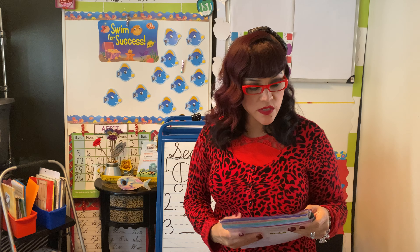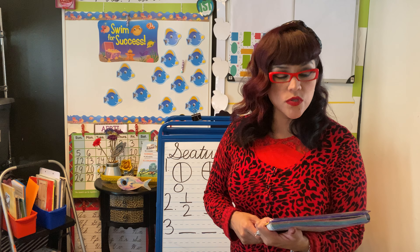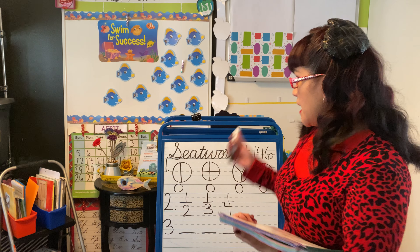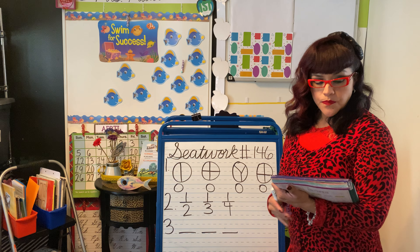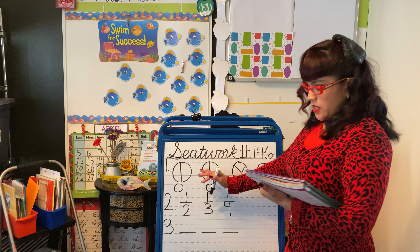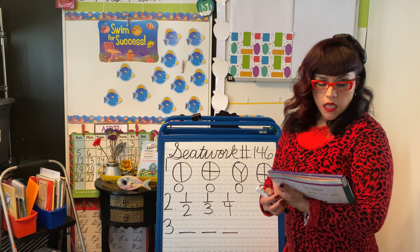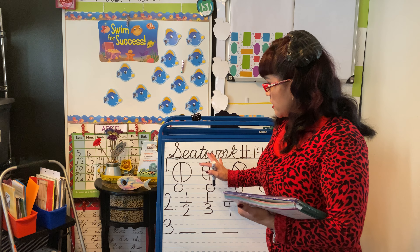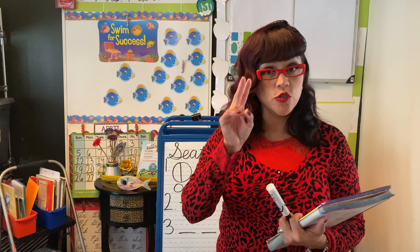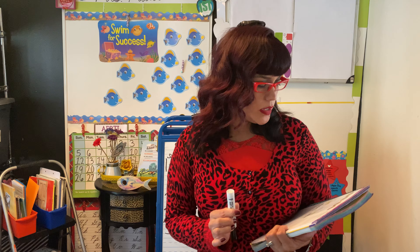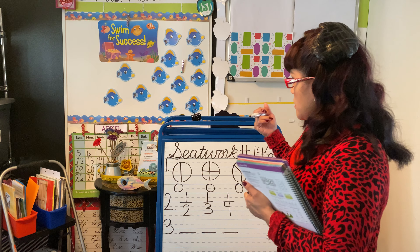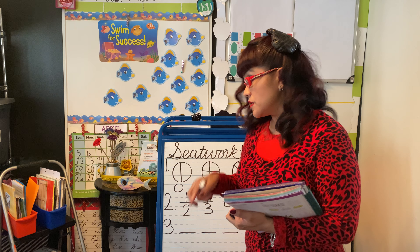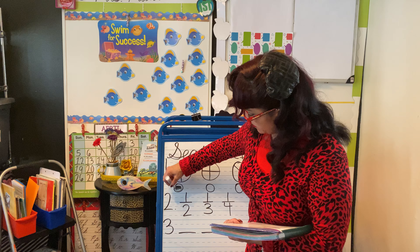Okay, so the directions say mark the bubble under the fraction that shows the greater part of the whole. So the greater part of the whole — you guys have two options for that. So pretend this is your pie; I already wrote it down for you so that you have your options there. Which one would you think would be the greatest out of the two that we're comparing right here? So right here you have four pieces, and right here you only have two larger pieces. Which one is greatest? So actually this would be the greatest because there's two equal larger pieces — this one has four smaller pieces. So your answer class should be the first bubble. Go ahead and bubble that in right now.